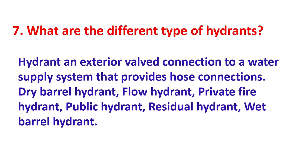What are the different types of hydrants? A hydrant is an exterior valve connection to a water supply system that provides hose connections. The types include: dry barrel hydrant, flow hydrant, private fire hydrant, public hydrant, residual hydrant, and wet barrel hydrant.